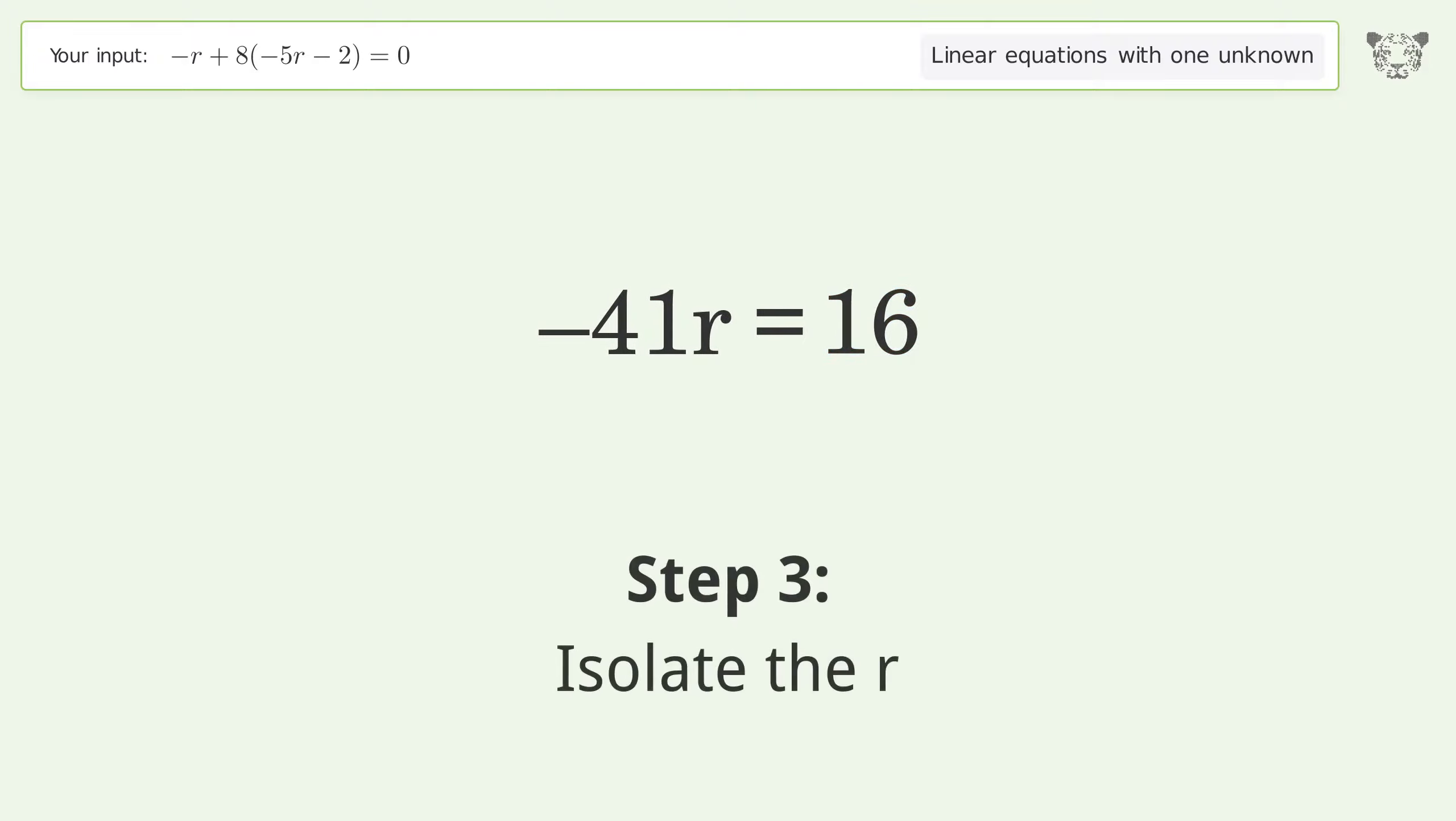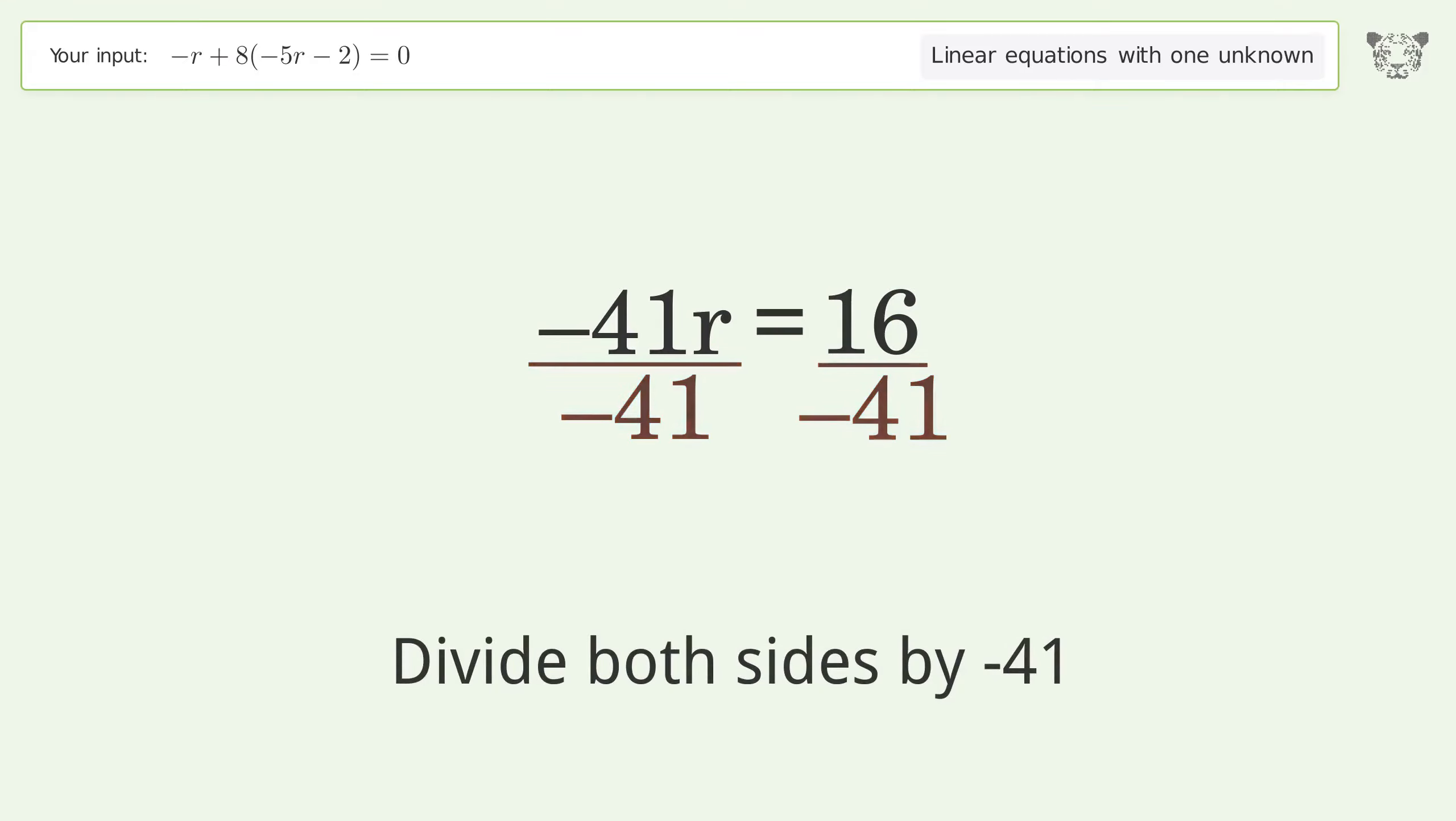Isolate the r. Divide both sides by negative 41. Cancel out the negatives.